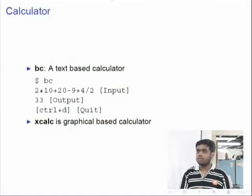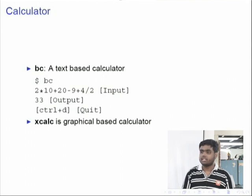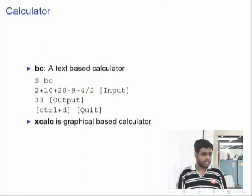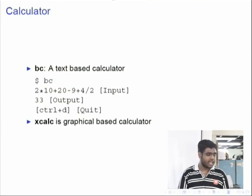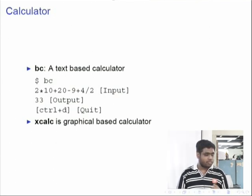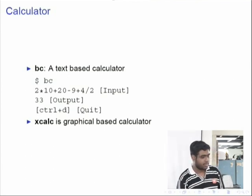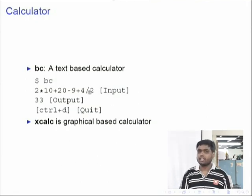Now we will see another command for a calculator. It is a text-based calculator. In Linux, you have GUI calculators like xcalc, but there is also a basic text version called bc. You type the command bc and then an empty prompt will expect input from you. You type your expression and the output will be shown. This is a basic small version of a text-based calculator.